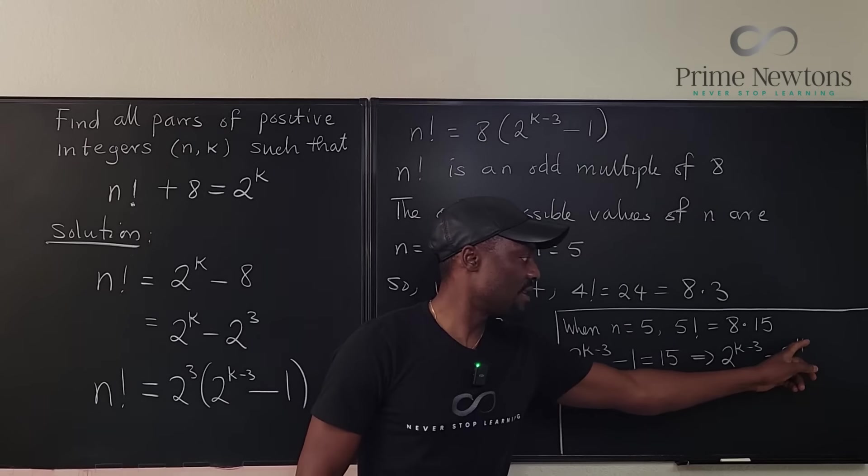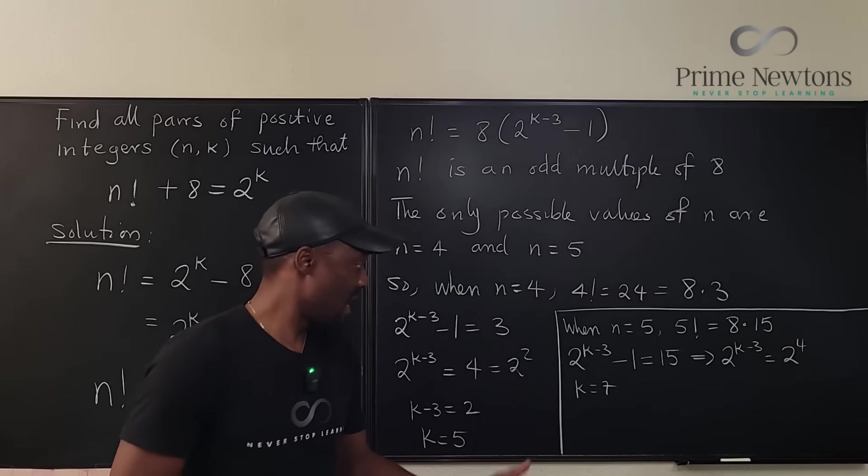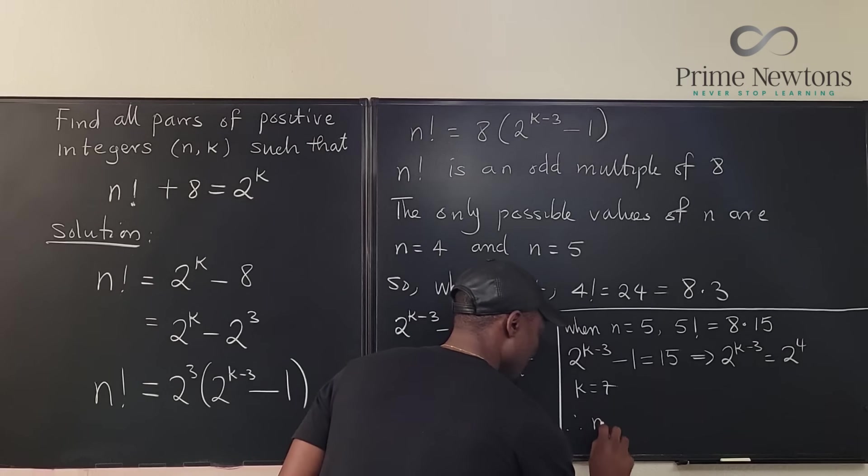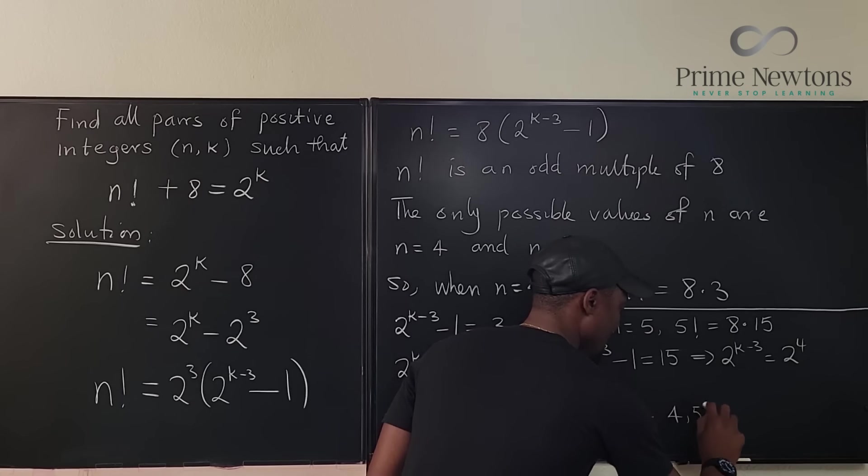And that's it. So our solutions n, k, therefore n comma k: 4 comma 5, and 5 comma 7.